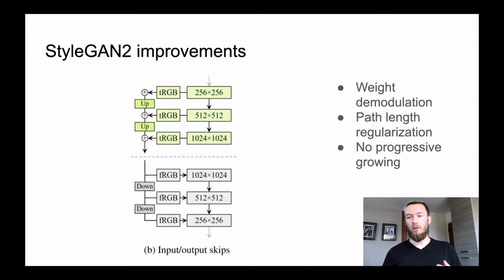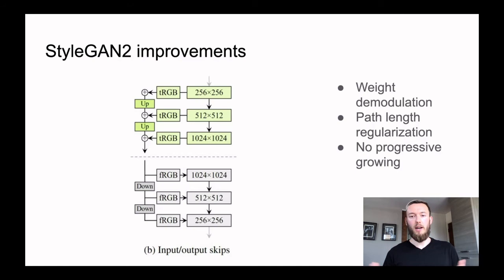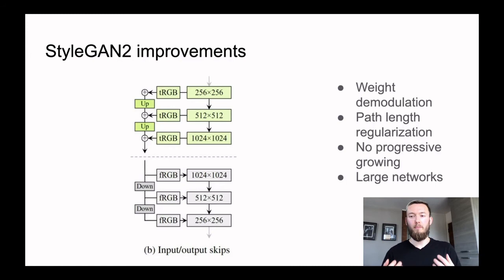They dropped progressive growing — now they train from the beginning at big resolution. At each layer they produce an RGB image: at the first level it's small, at next levels it's bigger, and at the end all these RGB outputs are added together to form the final image. Also, a really simple improvement: they use bigger networks, which also improves quality.